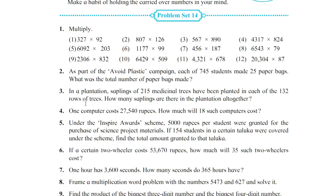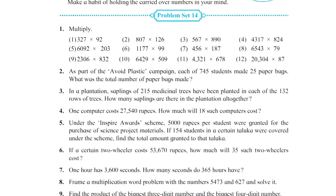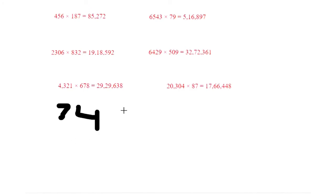As part of the avoid plastic campaign, each of the 745 students made 25 paper bags. What was the total number of paper bags made? So 745 students, and 1 child made 25 paper bags. We will multiply: 745 multiplied by 25. First you try to find the correct answer — just take one minute.